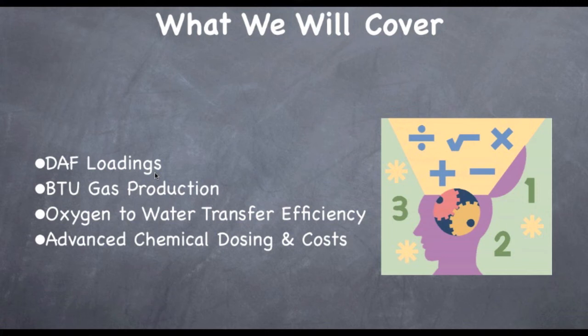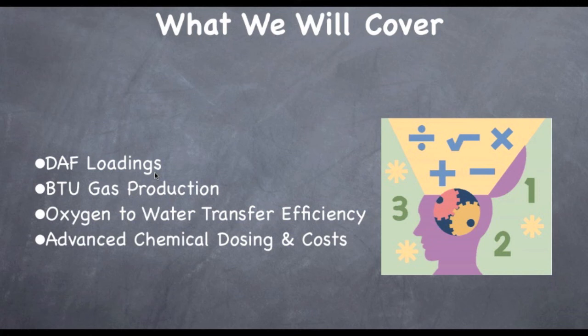The second problem is BTU gas production. BTU is British Thermal Unit — it's a measurement of heat generated by gas in an anaerobic digester. The third problem is oxygen-to-water transfer efficiency, which is how efficiently an aerator, whether mechanical or diffused, is putting oxygen into the water. And the fourth problem will be advanced chemical dosing and the costs associated with that.